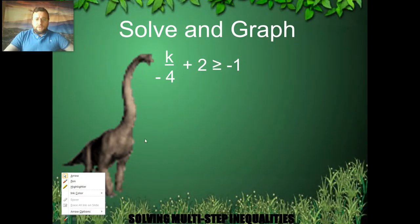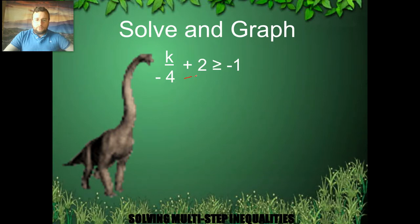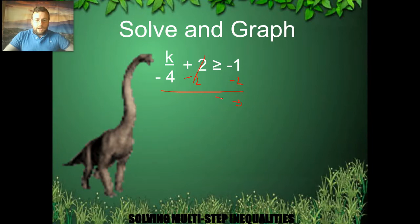For the next example, you have to get rid of the plus 2 first, so you subtract 2 from both sides. When you do that, the negative 2 and the plus 2 cancel each other out on the left. You have negative 1 and negative 2, which makes negative 3 on the right side. Because I subtracted the 2, my inequality sign stays the same. All I have left is k divided by negative 4 on the left.